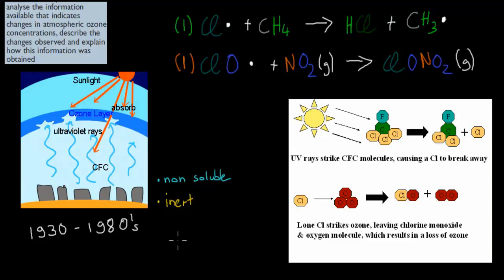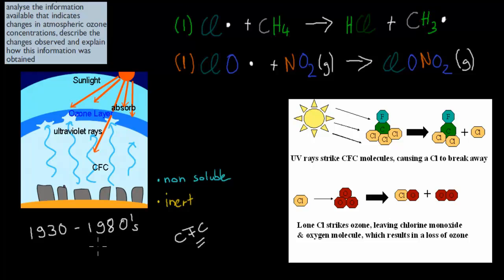In this video, I'm going to start talking about CFCs again initially. CFCs are your chlorofluorocarbons. These CFCs were mainly used in the 1930s up to about the 1980s — that's when their main use was. They were often used as refrigerants or in air conditioning units, or as propellant for spray cans.